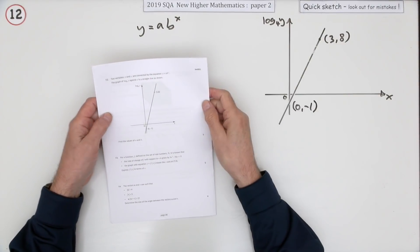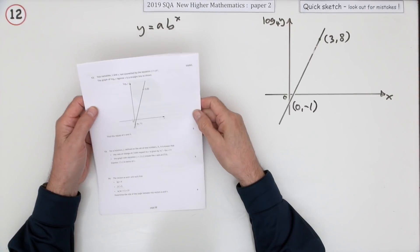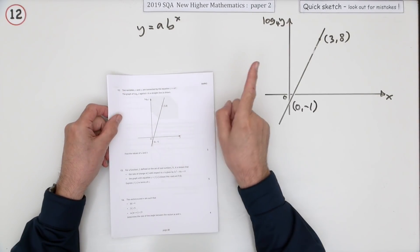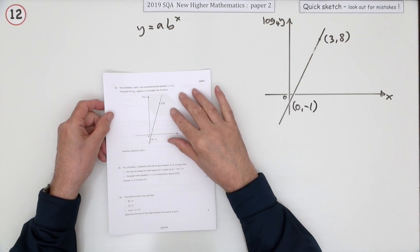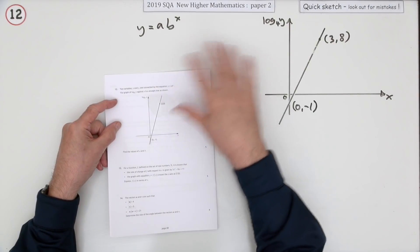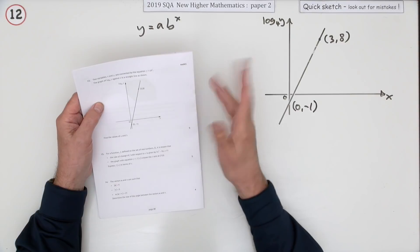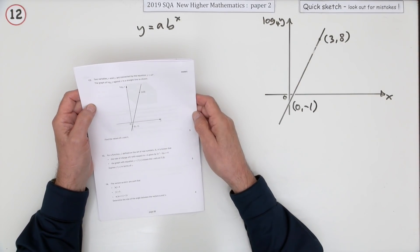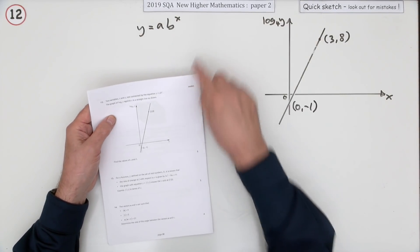Number 12 from Paper 2 of the 2019 Higher Maths, five marks. You've got the log graph - you weren't expecting that. I can't remember that happening before in the last 20 years. You've had the log graph and the exponential equation question in the same paper. They should sort of alternate or appear sporadically on their own. Anyway, here it is, five marks.